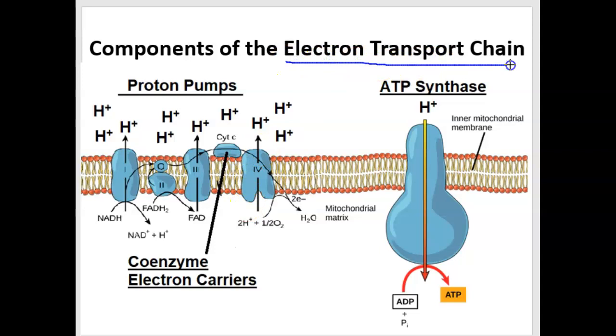So here's a picture of the components of the electron transport chain. We are in the inner mitochondrial membrane. Here's the matrix. And the NADH has been produced in various locations, the cytoplasm as well as the matrix. But it travels to the matrix, even if it wasn't already there, and drops off electrons.